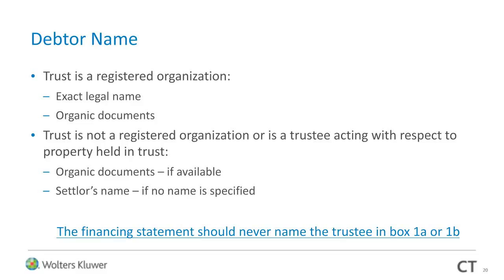If the debtor is a trust which is not an organization, or a trustee acting with respect to property held in trust, and the trust is named in the organic documents, use the name indicated. If no name is specified — if it just says 'trust' — then and only then would you use the settlor's name with additional information sufficient to distinguish the debtor from other similar trusts. The vast majority of modern trusts are named, so you shouldn't run into this frequently. Only in that rare instance would you use the settlor's name on your UCC-1 filing.